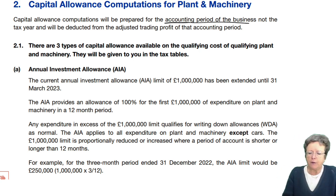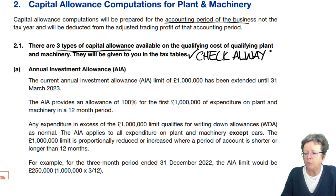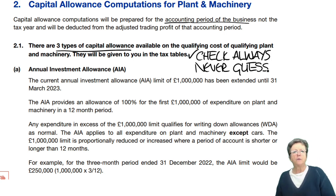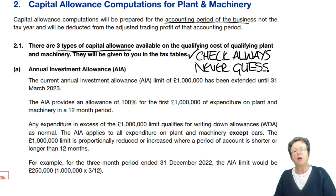There are three main types of allowance available, given to you in the rates. You always check the rates and you never guess. If you want to, stop the lecture and go have a look at that. I mentioned in the introduction that it may be worth having your tax rates at hand so that you can refer to them when doing various different things.